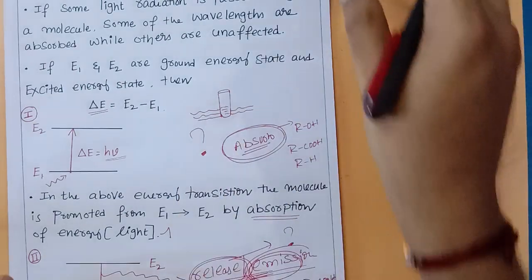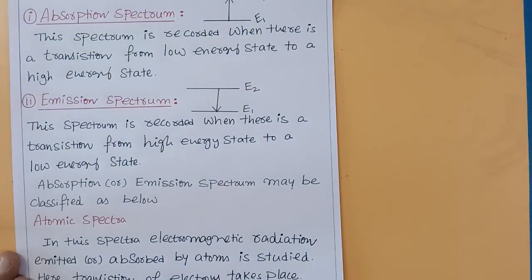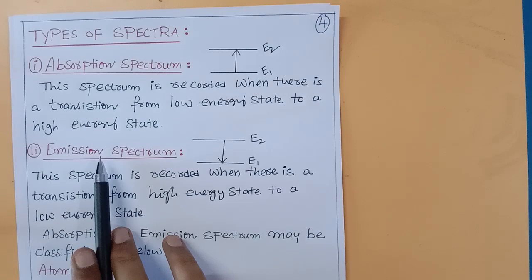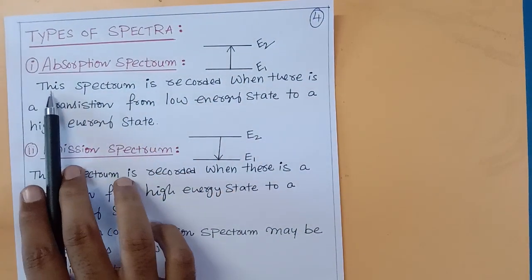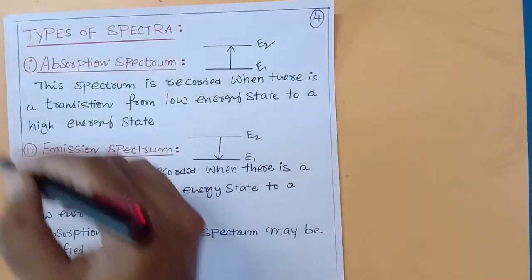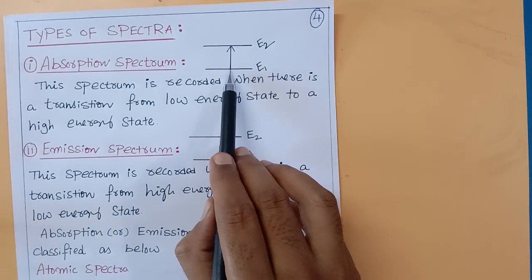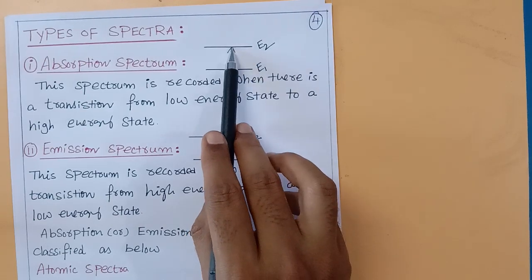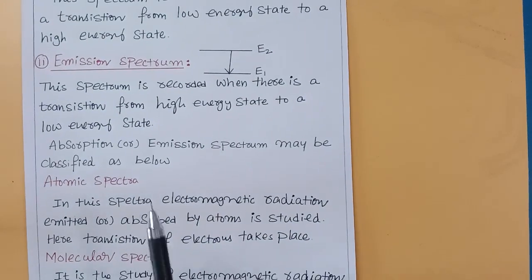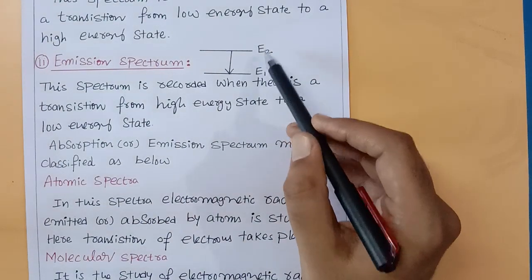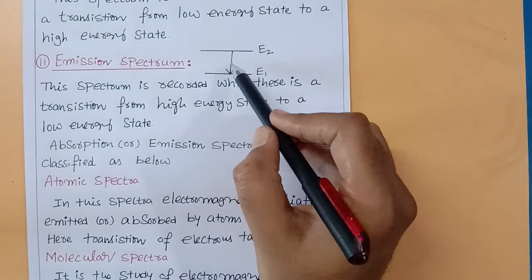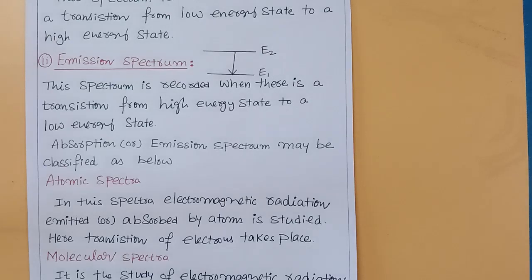There are two types of spectra. Absorption spectra: this spectrum is recorded when there is a transition from a low energy state to a high energy state — that is, from E1 to E2. Emission spectrum: this spectrum is recorded when there is a transition from a high energy state to a low energy state. When the molecule releases that energy, we record it, and that gives us the emission spectrum.